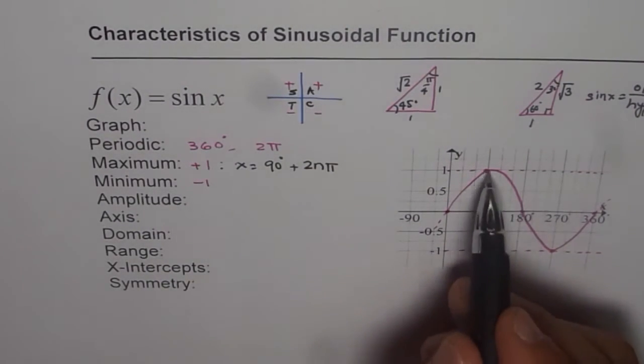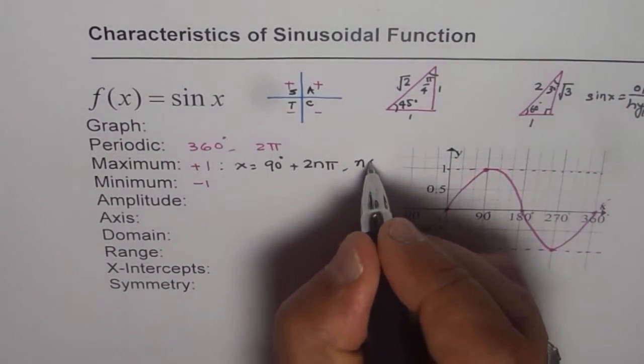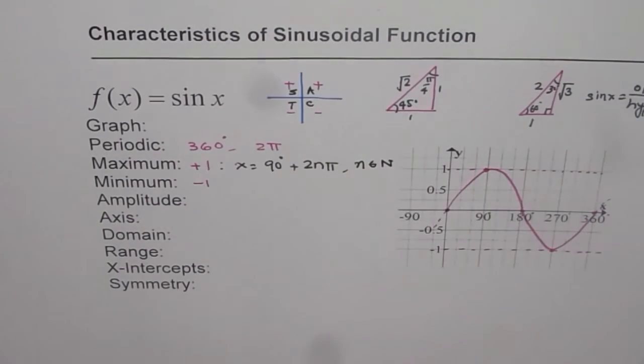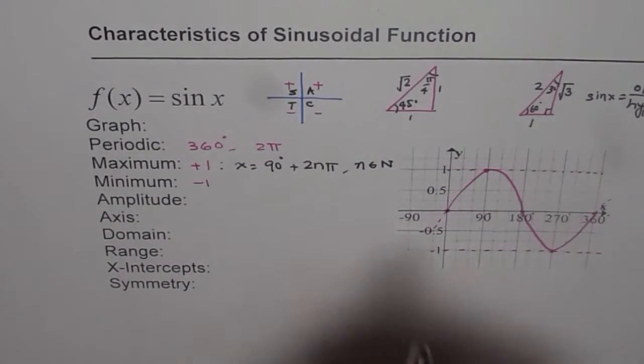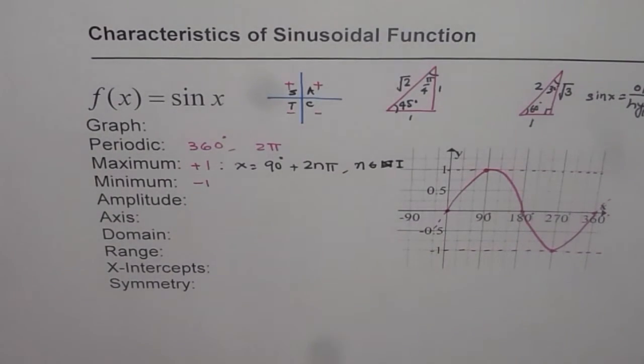So 90 degrees plus 2nπ, repeating after every π. So where n belongs to natural numbers. Well, I could write n as integers because it could go negative also. So n belongs to integers.